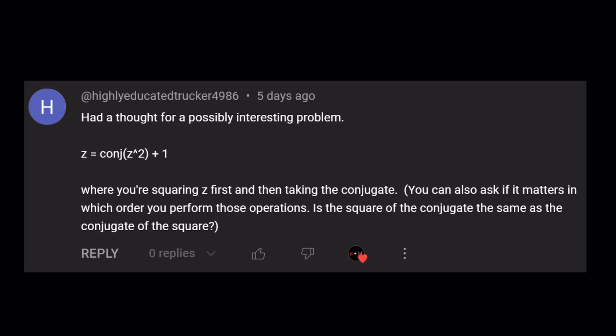And following his instructions, I'm going to pose a question here. Does the order matter in which we do the conjugacy and the squaring? In other words, is Z bar squared the same as Z squared bar? If I square the number and then take the conjugate, or if I conjugate first and then square it, do I always get the same answer?